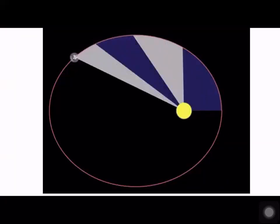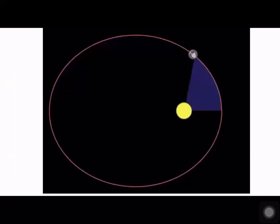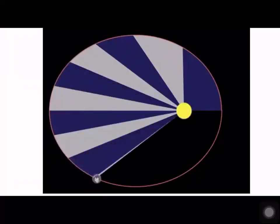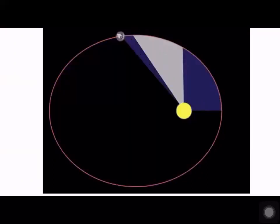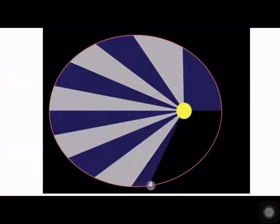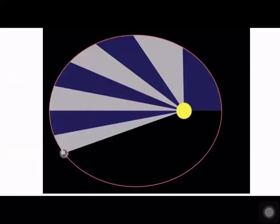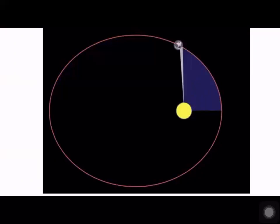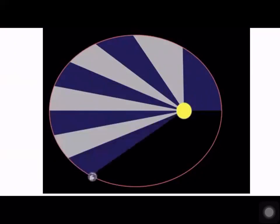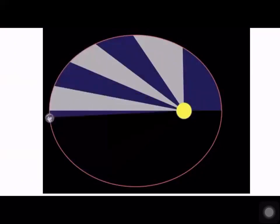Let's say all the blue areas each take 100 days to travel. Each blue region also takes 100 days — so in an equal time, the area swept is equal. This is called the equal area in equal time law. So Kepler's second law: a line that connects a planet to the sun sweeps out equal areas in equal times.